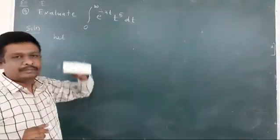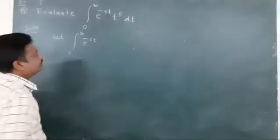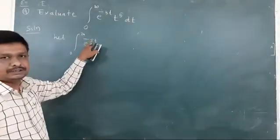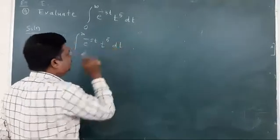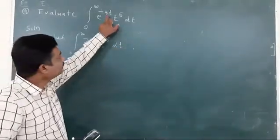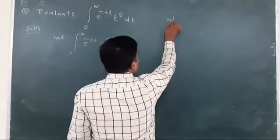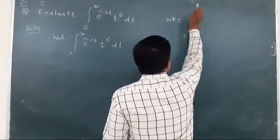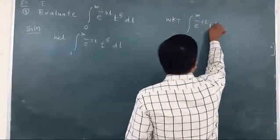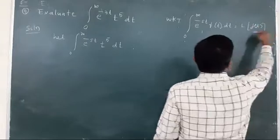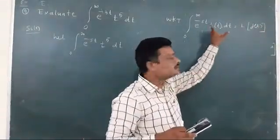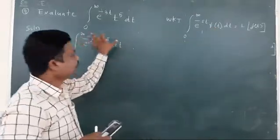To solve this example, in the first step I will consider the integral from 0 to infinity of e to the power of minus st — instead of this 3, I will take s here; this is the important step — and write the function t to the power of 5 dt as it is. We know by definition that the integral from 0 to infinity of e to the power of minus st times f of t dt equals L of f of t. I will apply this definition to solve this integration.